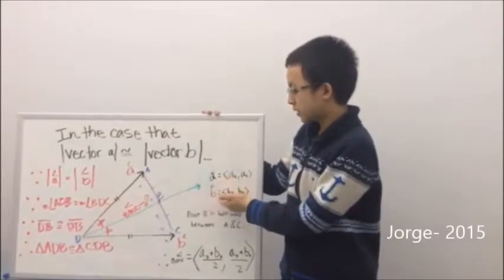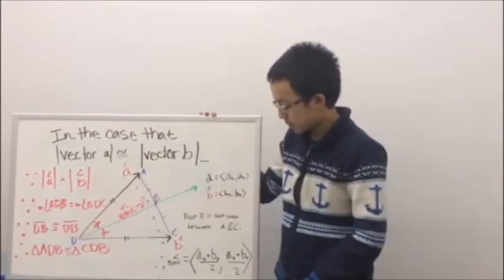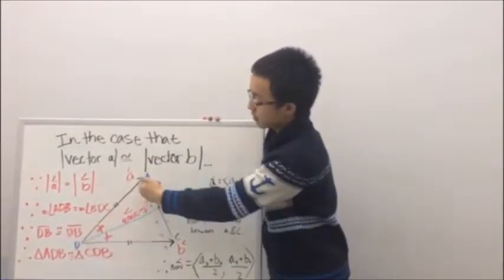We have Vector A and Vector B. Vector A is (AX, AY). Vector B is (BX, BY). And as you can see from this lovely diagram...